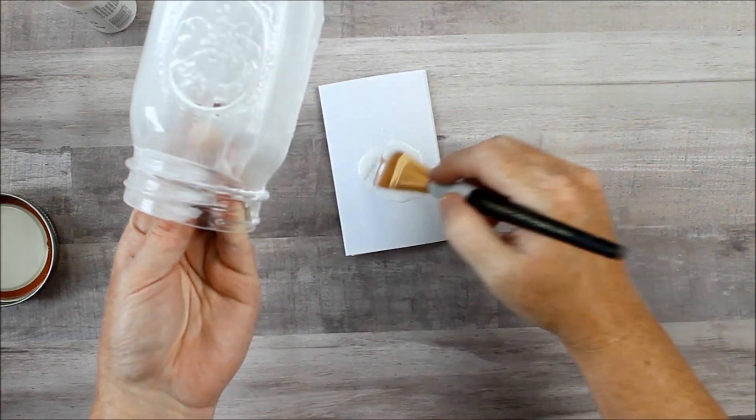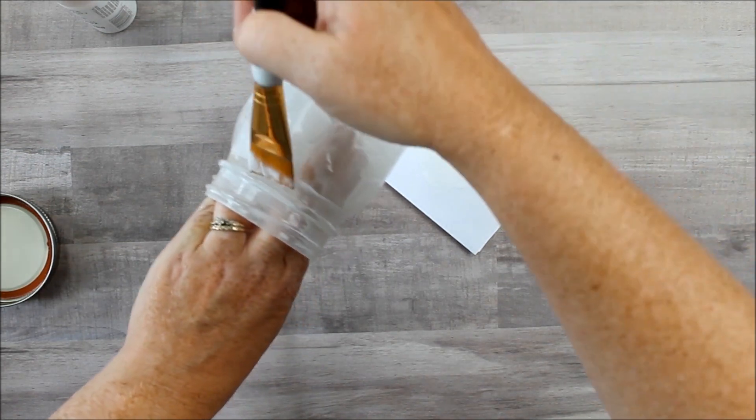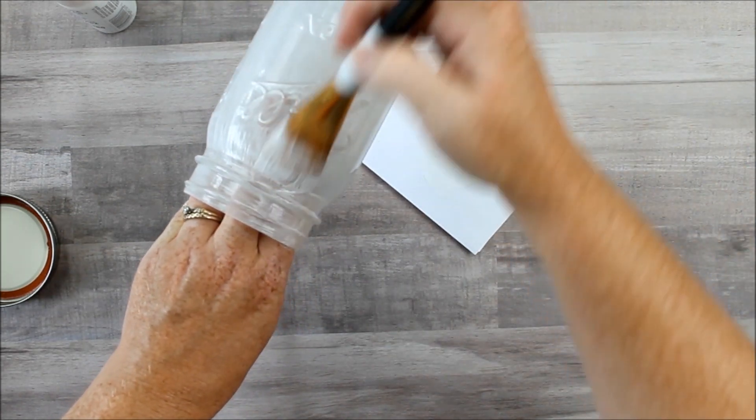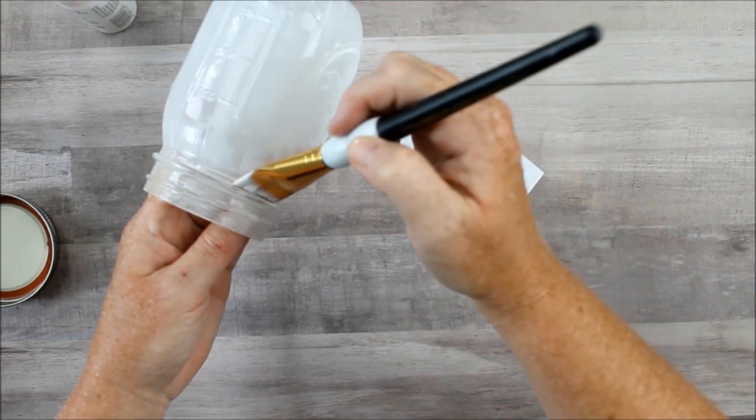You can do one or two coats of this paint. I found that one coat was fine, but two coats you could definitely add. Just make sure that you can still see through it because you want to be able to see those lights once you add them.